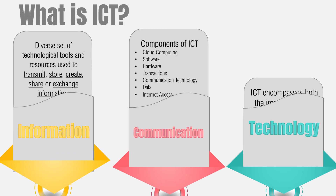Components of ICT: The first one is cloud. According to Investopedia.com, cloud computing is the delivery of different services through the internet. These resources include tools and applications like data storage, servers, databases, networking, and software. Software is the programs and routines for a computer or electronic device which make it run. Hardware refers to the computer's tangible components or delivery system that store and run the written instructions provided by the software.